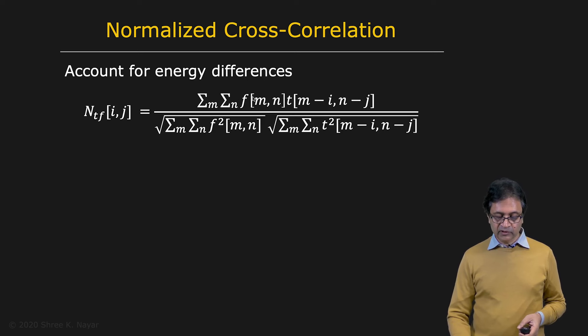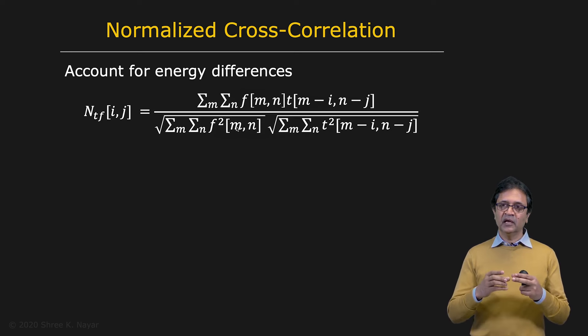So here you see the same expression for the cross correlation. But you're going to divide it this time by these two terms. And this corresponds to the energy in the image, in the area of the image that overlaps with the template. That's what this is. And this is the energy of the template itself.